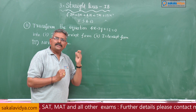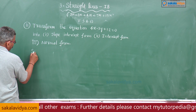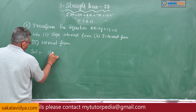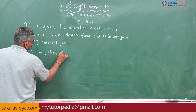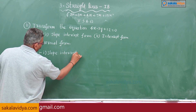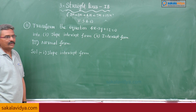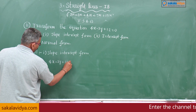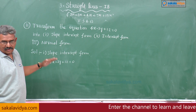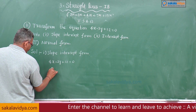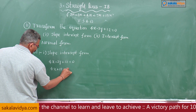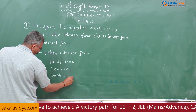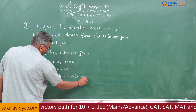Let us proceed to solve this problem. First one is slope intercept form. The given line is 4x minus 3y plus 12 equals 0 — this is known as general form. Now, take minus 3y to the other side: 4x plus 12 equals 3y. Divide both sides by 3 to get the y value.